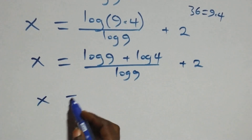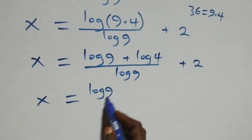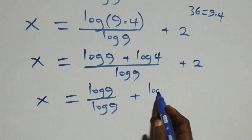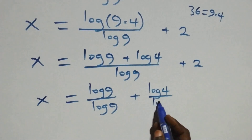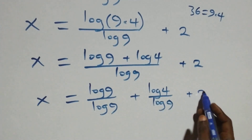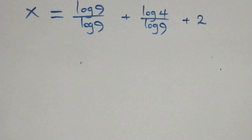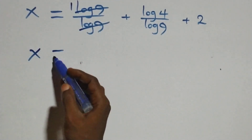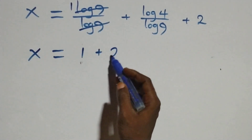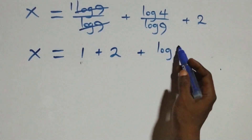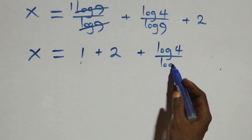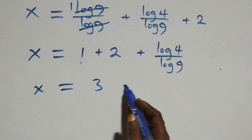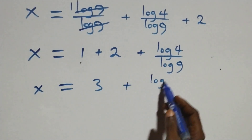We separate this into two fractions: x equals log 9 over log 9 plus log 4 over log 9 plus 2. The log 9 terms cancel, leaving 1, which implies x equals 1 plus 2 plus log 4 over log 9. That gives x equals 3 plus log 4 over log 9.